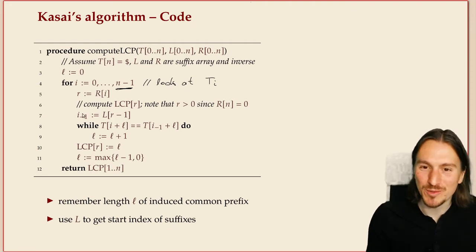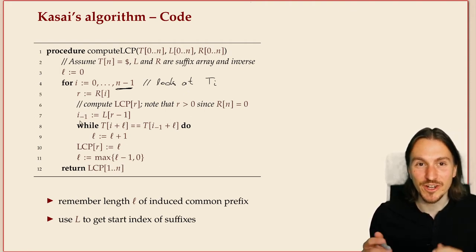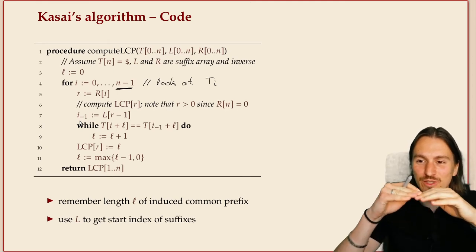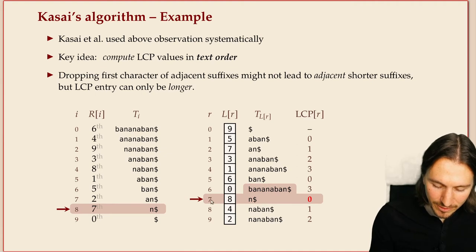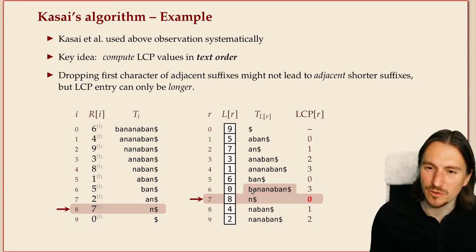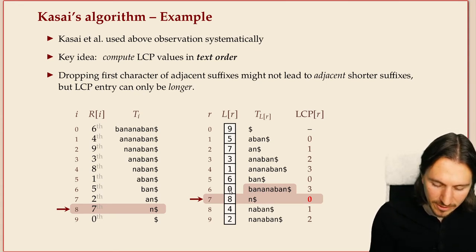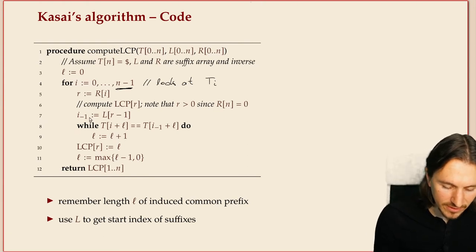Now this I minus one, maybe a bit weird of a notation, but that just is the starting index of the suffix that precedes this thing on the right. So if this would have been my R, then I minus one would be zero because the suffix that precedes it in sorted order L of R minus one is zero. That's the starting index here for banana ban. That's exactly that.